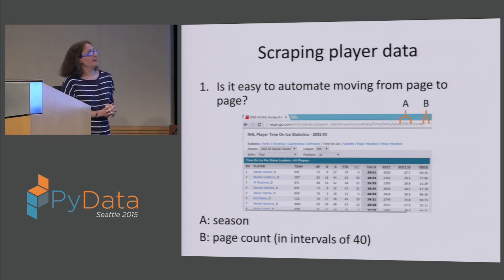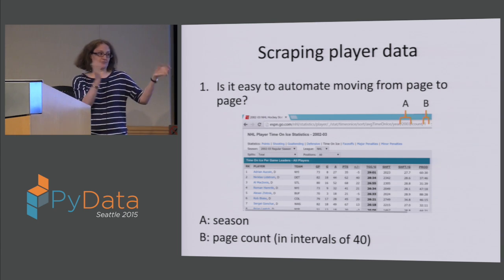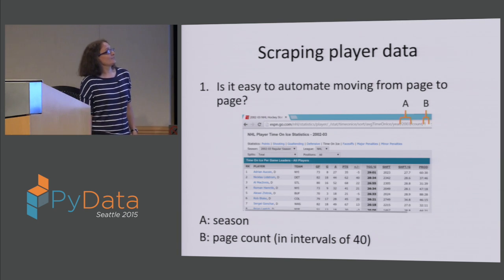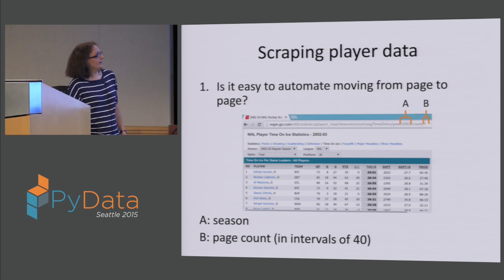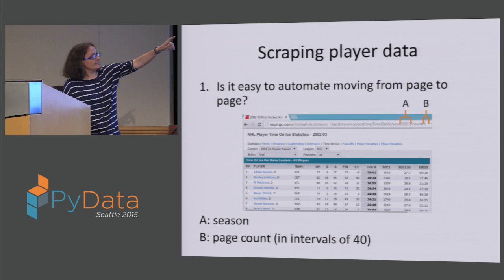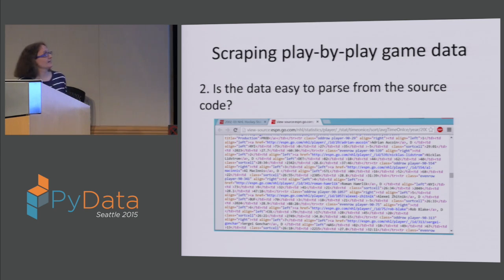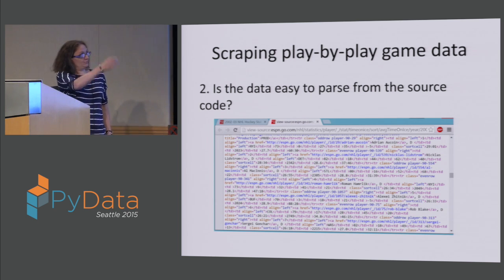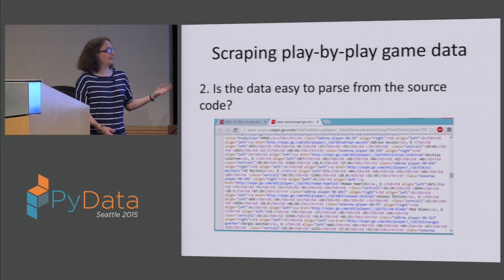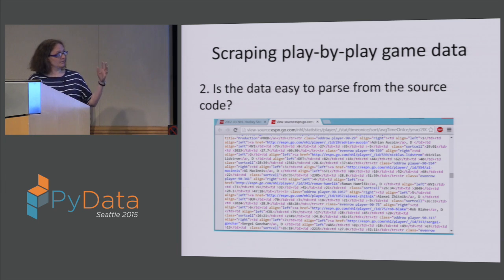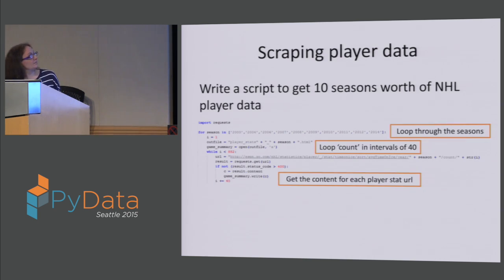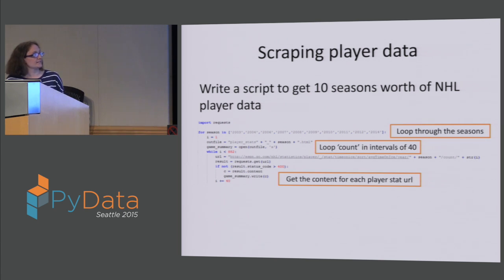I also wanted to get player data to account for whether it was a real skilled guy or an enforcer. I got this from ESPN.com. They have an indicator for the season, and then you can iterate through their pages in intervals of 40. Their data looks like a garbled mess but is actually highly structured, so if I'd still wanted to use BeautifulSoup at this point I probably could have. To get all seasons of stats, I looped through the seasons and through the counts in intervals of 40, adding it to the same file.